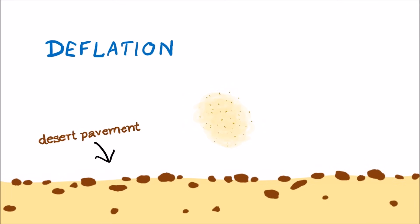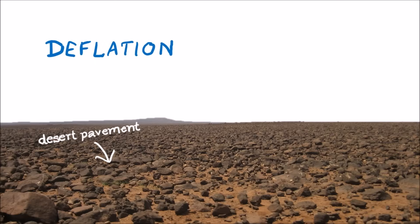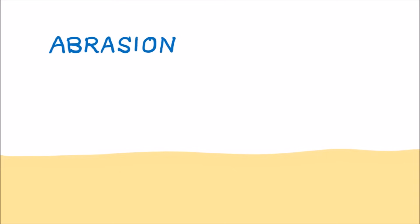Any rocks that were in the sand will be left behind to form a desert pavement. Abrasion happens when material carried in the wind is blasted at rock surfaces. This causes them to wear away and any rough edges become smoother and flatter.